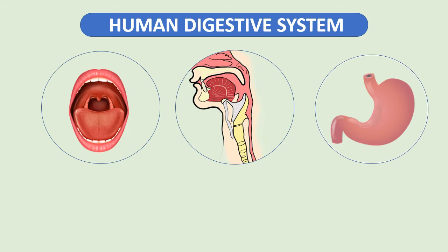The esophagus receives food from the pharynx. The epiglottis is a small flap that folds over your windpipe as you swallow to prevent you from choking. A series of muscular contractions within the esophagus called peristalsis delivers food to your stomach.